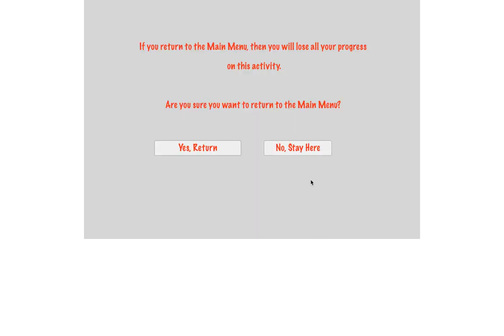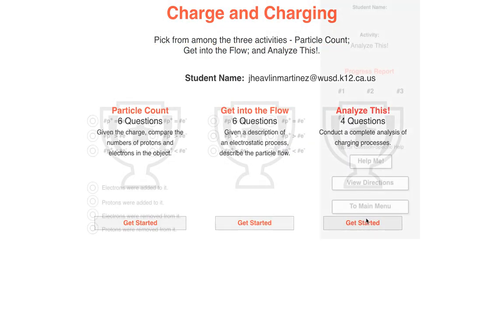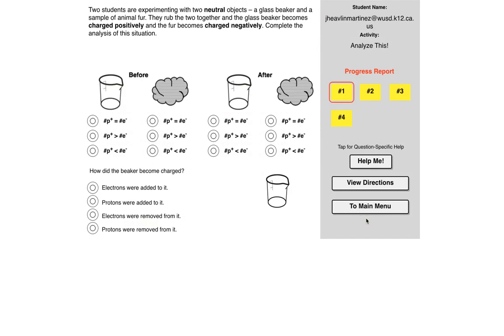Last one. Let's take a look at analyze this. Two students are experimenting with two neutral objects, a glass beaker and a sample of animal fur. They rub the two together and the glass beaker becomes charged positively and the fur becomes charged negatively. Complete the analysis. They were neutral before, so the protons equal the electrons before they interact. Now what's going to happen afterwards?